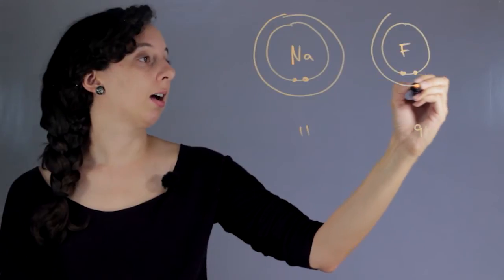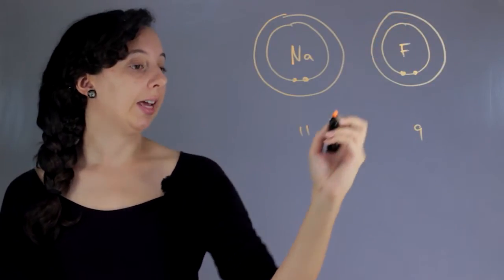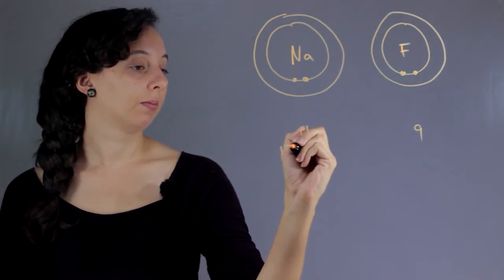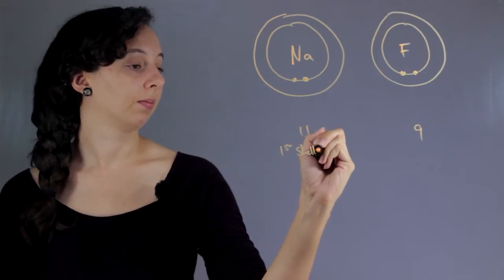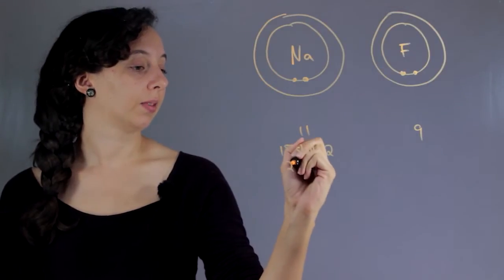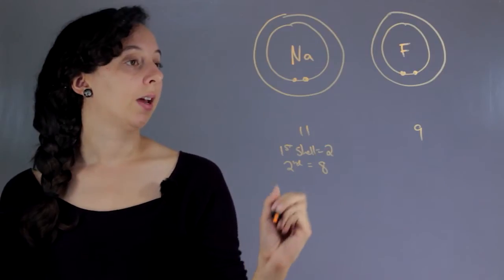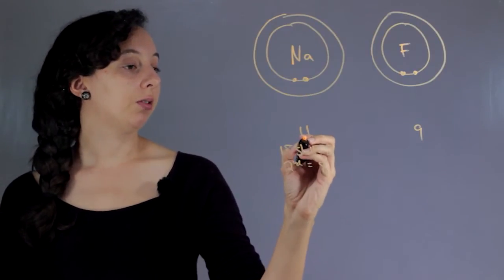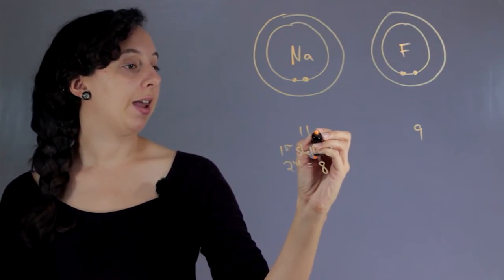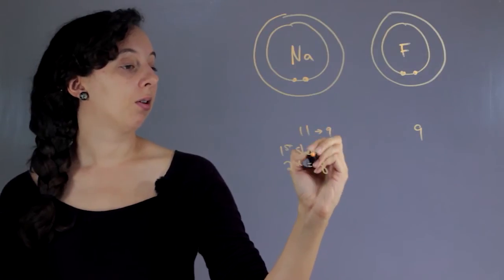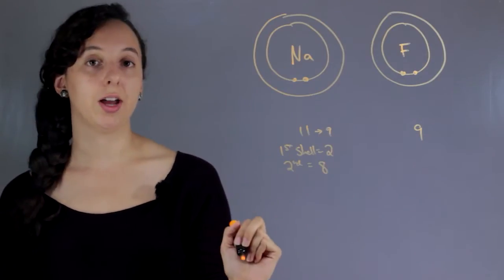And now we move to the second shell. And the second shell is always 8. So first shell 2, second 8. And so we already used 2, so we're at 9.